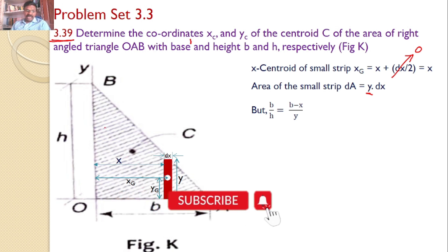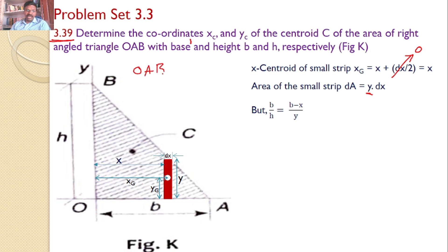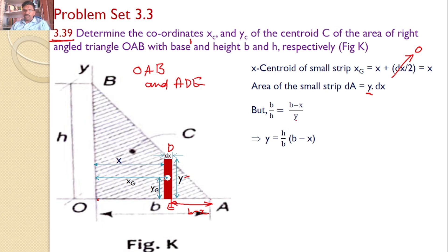Consider the right angle triangle OAB and another small right angle triangle ADE. For the full right angle triangle OAB, the base value equals B and the height equals H. For the small right angle triangle, the base equals B minus X and the height becomes Y. By using the concept of similar triangles, I can write B by H equals B minus X by Y, so Y equals H by B into B minus X. I will use this equation — the height of the strip Y depends on X through the relation Y equals H/B times (B minus X).